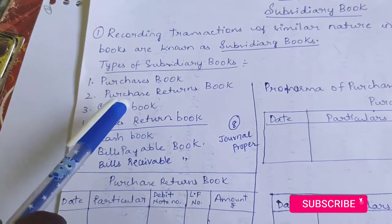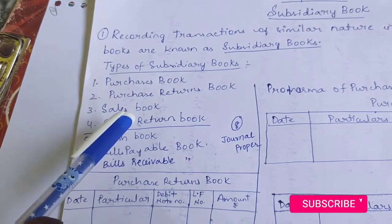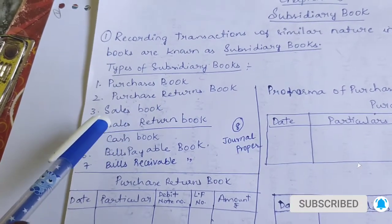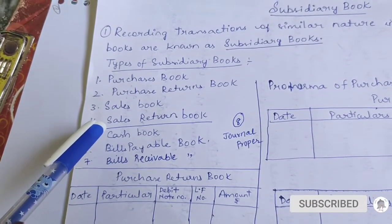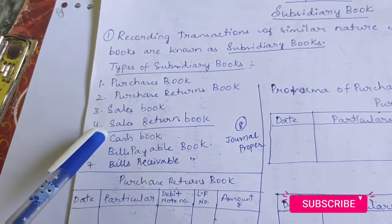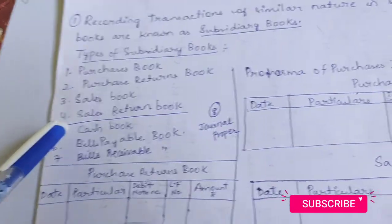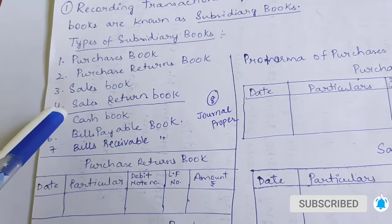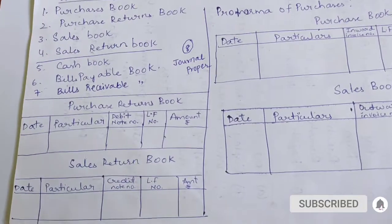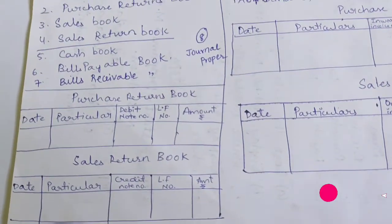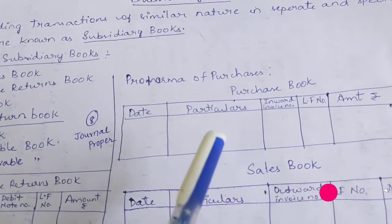Next is purchase returns books. In the purchase returns book, we record credit purchase return transactions. Remember, this is very important. Let us now look at the quick formats for the 4 important subsidiary books. First is the purchase book.